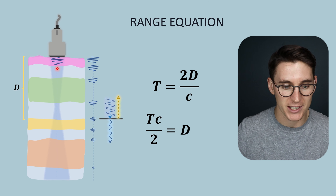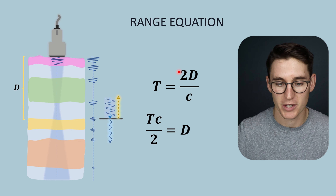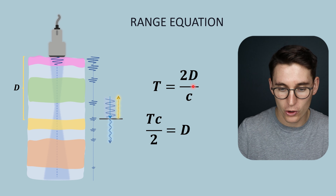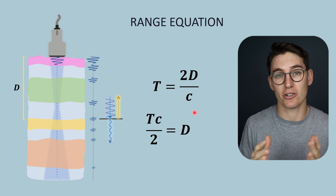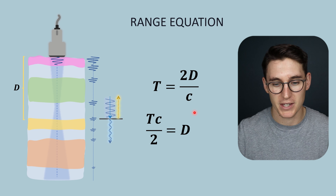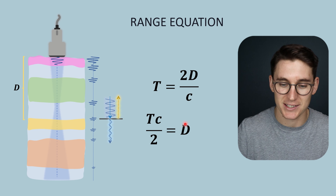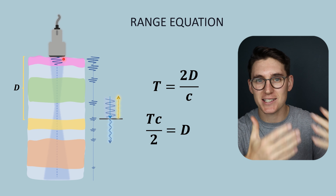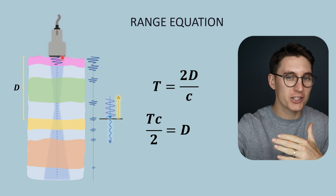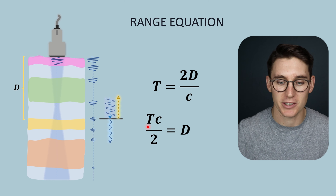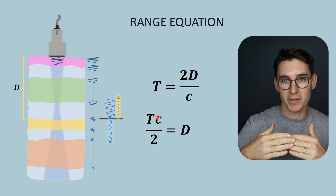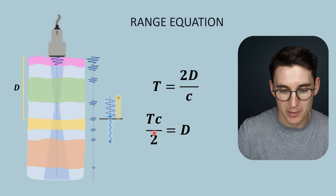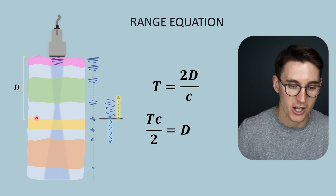The time for the echo to travel from the ultrasound machine to the tissue boundary and return back is represented by: two times the depth divided by the speed of sound. We use the average speed of sound through soft tissue of 1540 meters per second — that's a value you need to remember. We can rearrange this equation to isolate distance: time multiplied by the speed of sound gives the total round-trip distance, which we then divide by two to get the one-way depth.